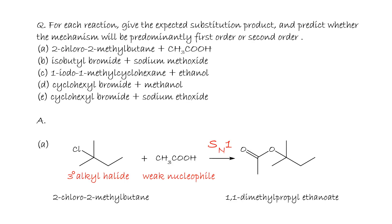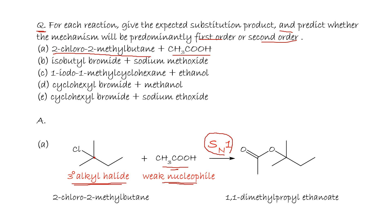Let's apply what we have covered. First question: for each reaction, give the expected substitution product and predict whether the mechanism will be predominantly first order or second order. For 2-chloro-2-methylbutane in acetic acid: this is a tertiary alkyl halide, and acetic acid is a weak nucleophile, so we expect SN1.